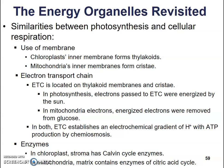They both use the electron transport chain, located in the thylakoid of chloroplasts and in the cristae of mitochondria. In photosynthesis, electrons are energized and passed through the electron transport chain, getting their energy from the sun. In mitochondria, energized electrons are removed from glucose. Both electron transport chains establish an electrochemical gradient of hydrogen ions and use that concentration gradient to generate ATP.